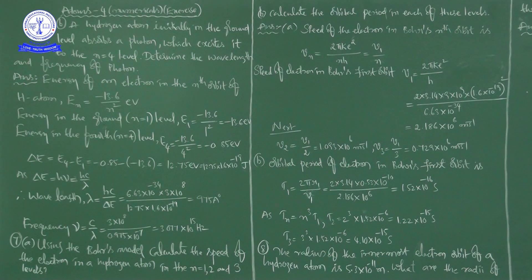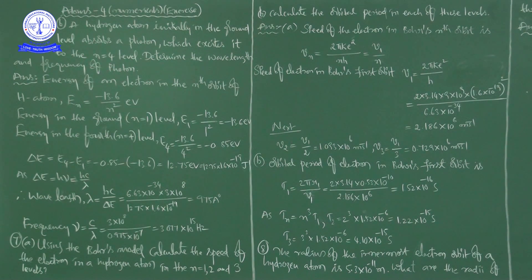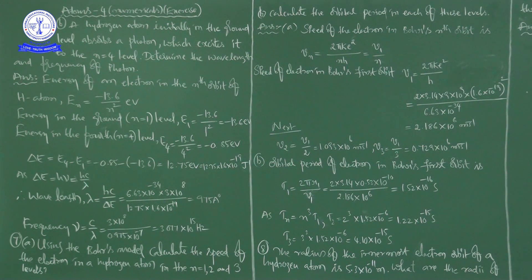Let me repeat once again — try to understand the situation. A hydrogen atom initially in the ground level absorbs a photon — a packet of energy — which excites it to the N equal to 4 level. Determine the wavelength and frequency of the photon.